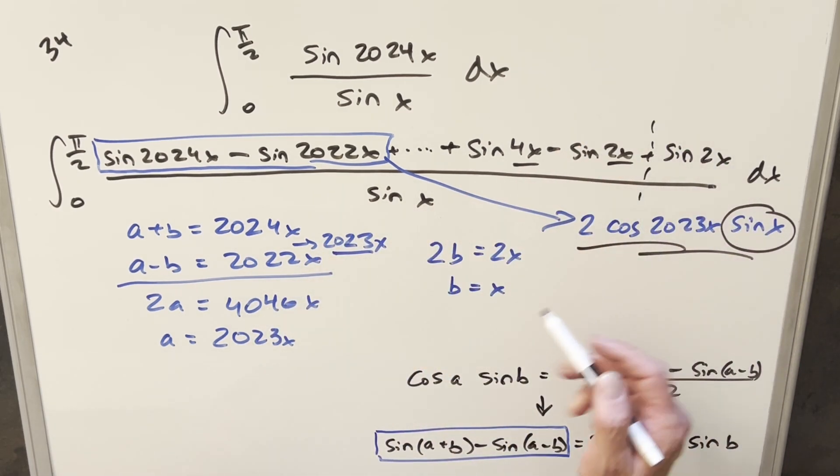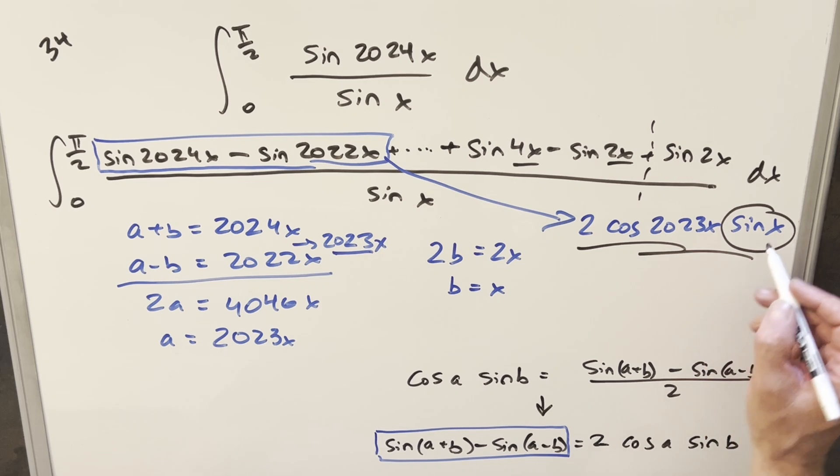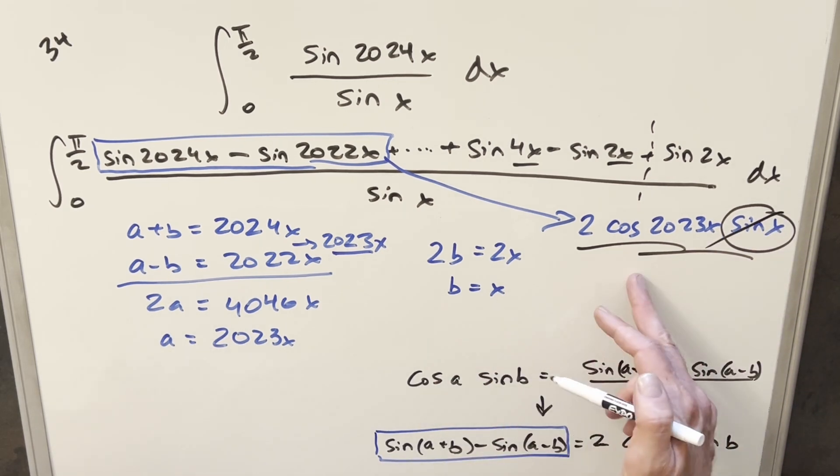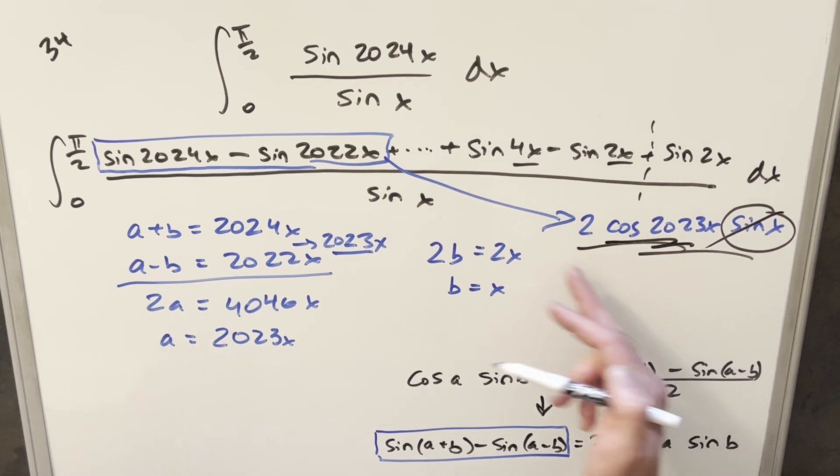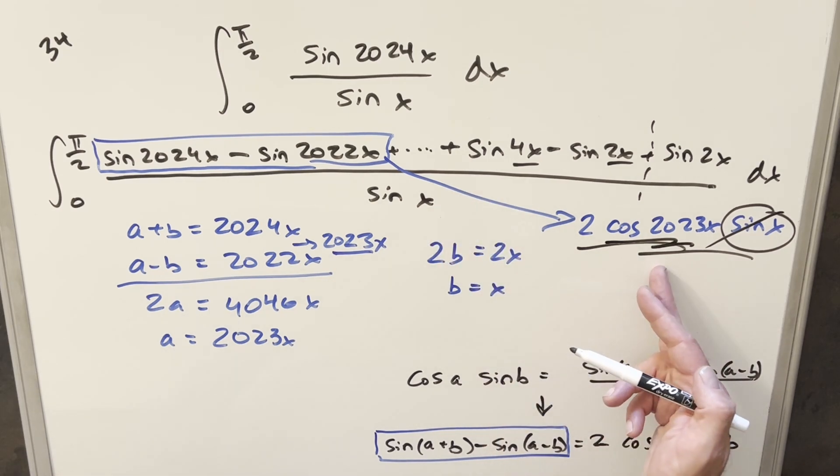And we've got sine x in the denominator. And so for every single one of these, not counting this last one, for all of these down to here, the sine x is going to cancel off. We're going to be integrating a sum of cosines. That's easy to integrate. They're all going to be easy to integrate. So this is really going to simplify this a lot.